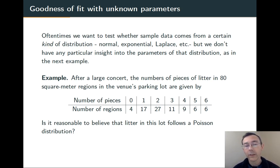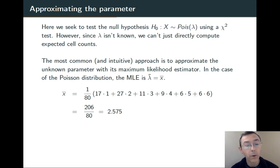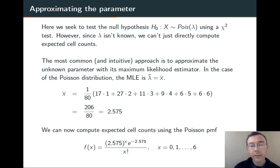So we'd like to calculate expected numbers of regions for each of the numbers of pieces of litter. The problem is that we can't do that from a Poisson distribution until we know what the parameter of that distribution might be. So the most obvious thing to do is just estimate that parameter using maximum likelihood estimation. For a Poisson distribution the maximum likelihood estimator for lambda is going to be the sample mean x̄. So we compute that, we get 2.575, and that gives us a probability mass function for our Poisson distribution.